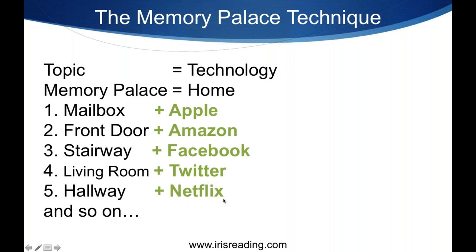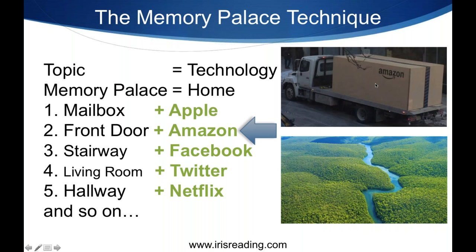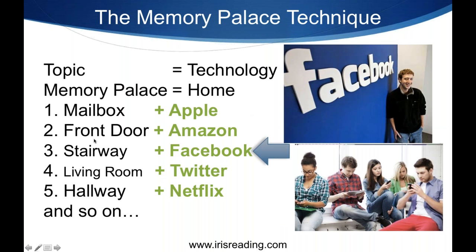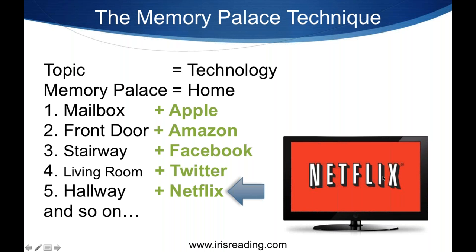Let's say you have to remember Apple, Amazon, Facebook, Twitter, and Netflix in order. For Apple, the visual could be actual fruit, iPhones, MacBooks, or Steve Jobs. I'd associate that with my mailbox — maybe the ghost of Steve Jobs flying out of my mailbox, or you open it and 20 iPhones fall out, or a bunch of apples fall out. Any ridiculous image helps you remember the first item is Apple. For number two, I'd picture a giant Amazon box sitting in front of my front door. For number three at the stairway, I'd picture Mark Zuckerberg sitting on my stairway checking Facebook. For Twitter in the living room, a bunch of blue birds flying around. For Netflix in the hallway, a flat-screen TV playing House of Cards on the floor of my hallway — a weird image, since a TV wouldn't normally be there.